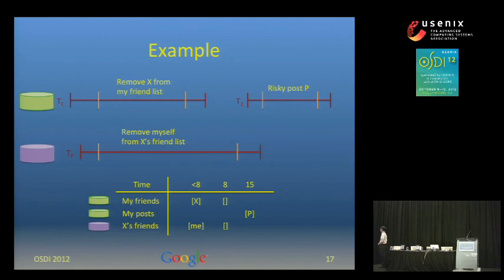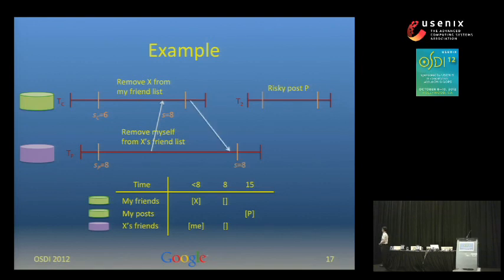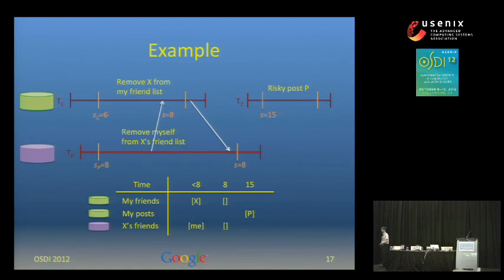Let me run through the example of how this works with the data representation. Suppose we have a transaction where we remove X from my friend list and myself from X's friend list. The two participants choose 6 and 8 for their timestamps; 8 gets chosen as the overall timestamp and propagated to the participants, so the write happens at time 8. Then transaction 2 happens, choosing timestamp 15 through the described algorithm, so the post shows up at time 15. This uses TrueTime to compute timestamps across machines — across the green and purple shards — and they have consistent timestamps even though they're in different data centers.